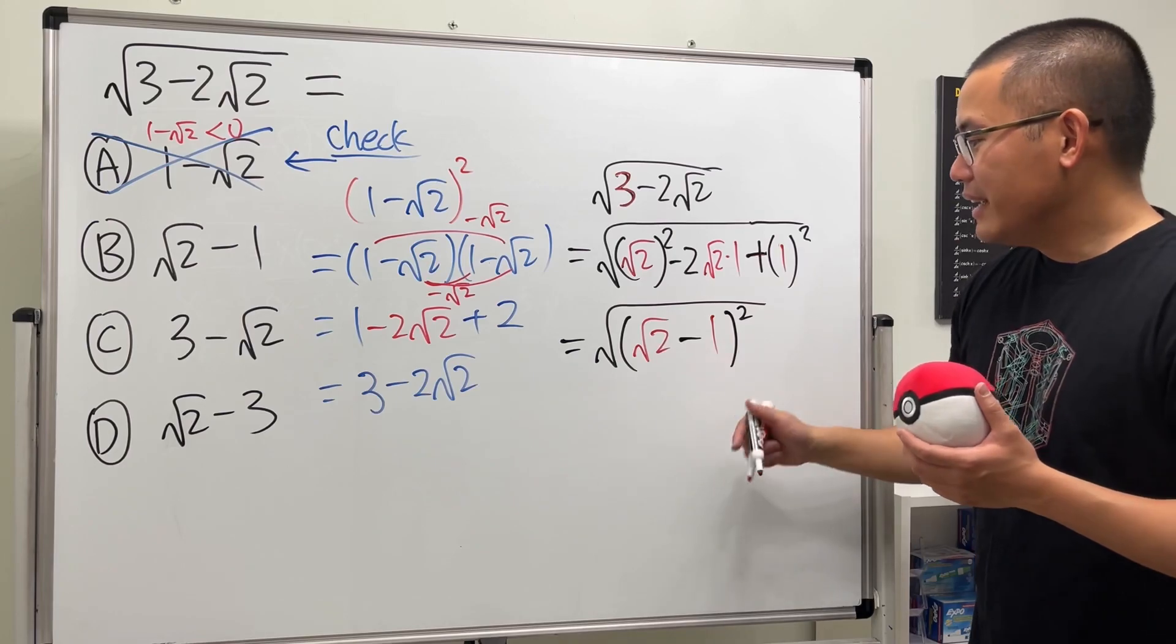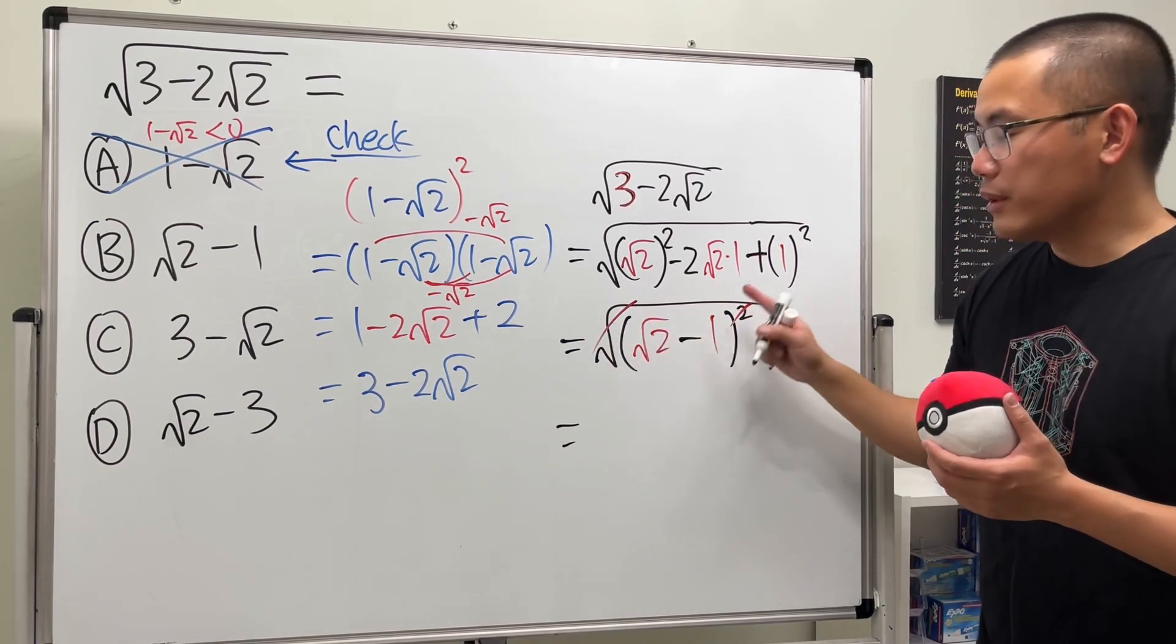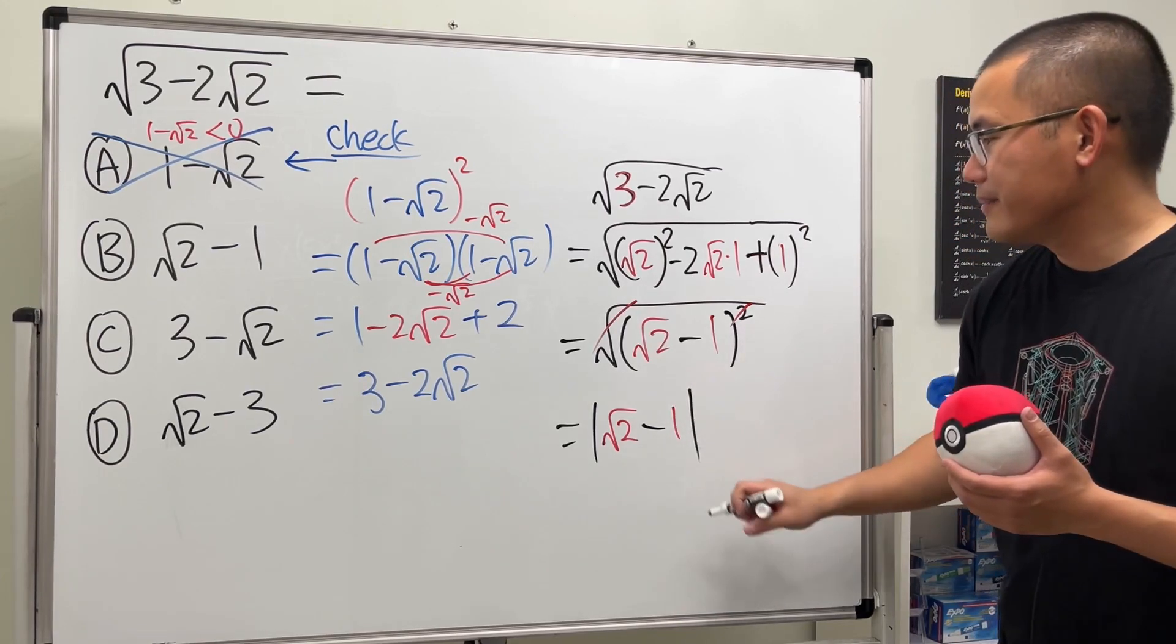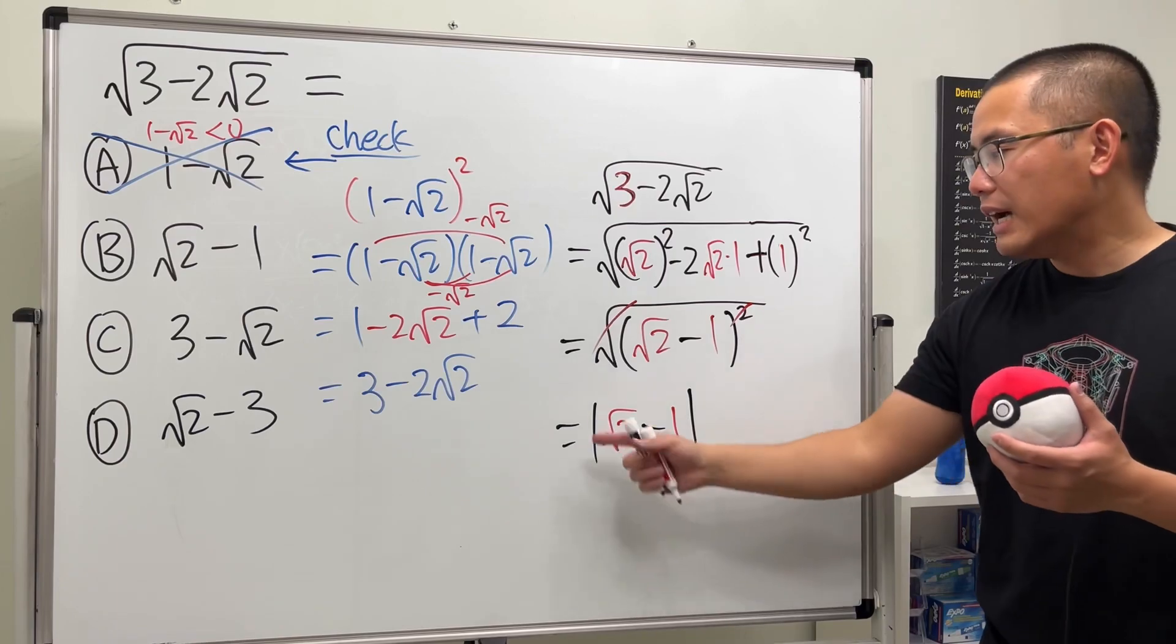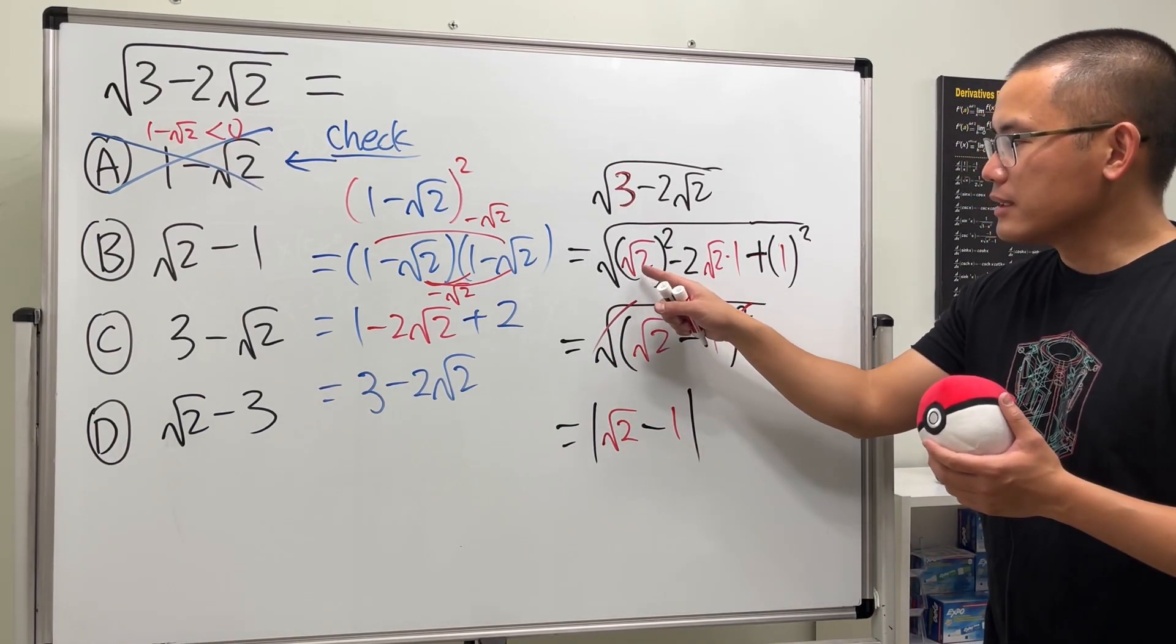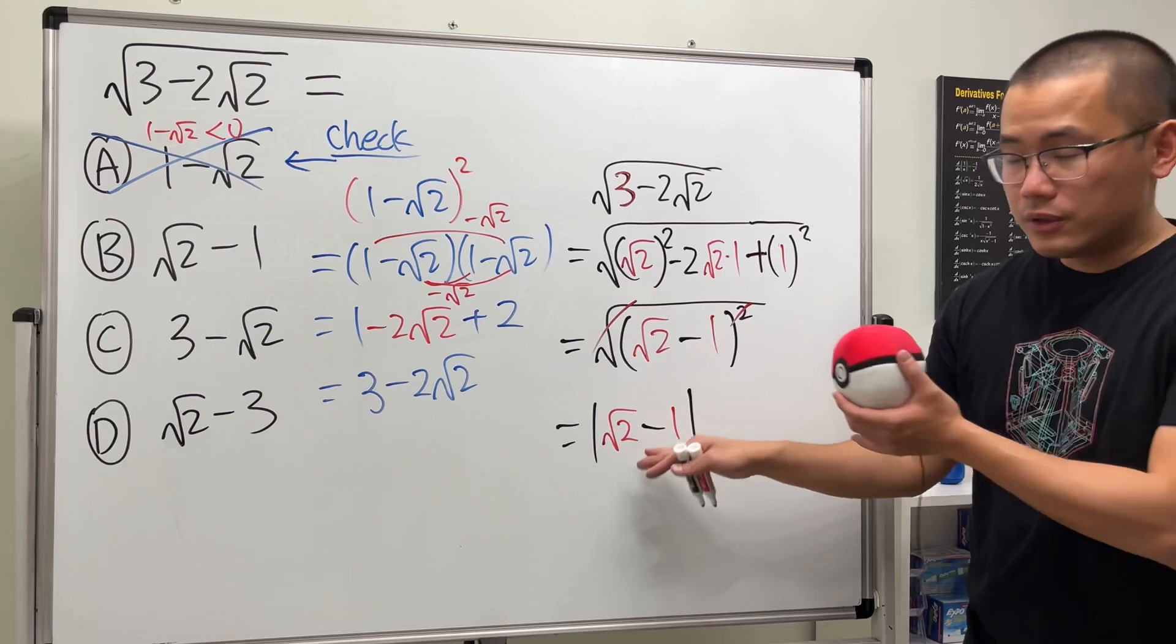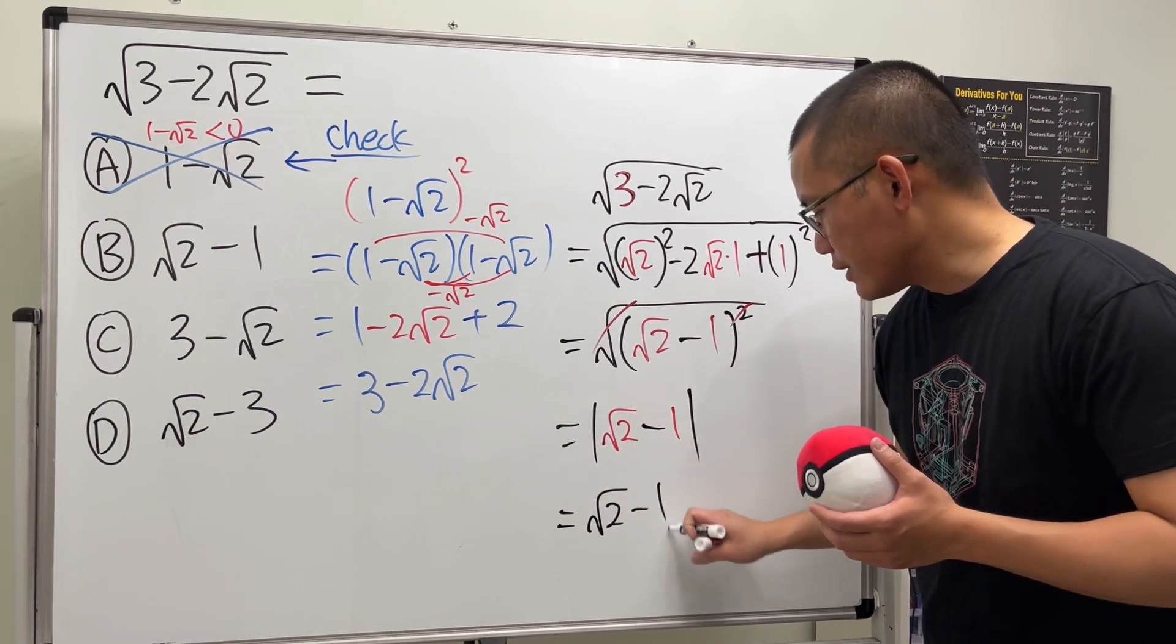Now we can cancel the square root and the square. When we cancel them, remember to put the absolute value, so we have |√2-1| because the output is always positive after we have that square root. That's the reason why I put down (√2)² first, on purpose, because √2-1 is positive. So this is just √2-1.